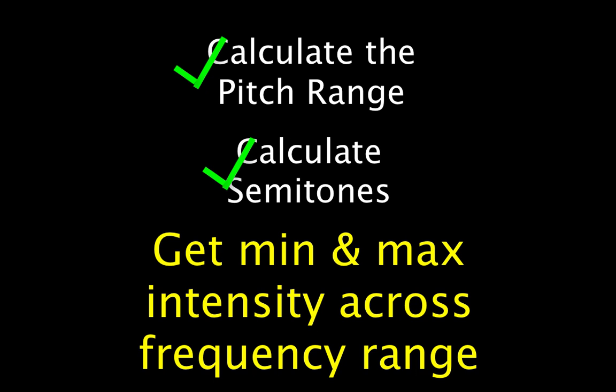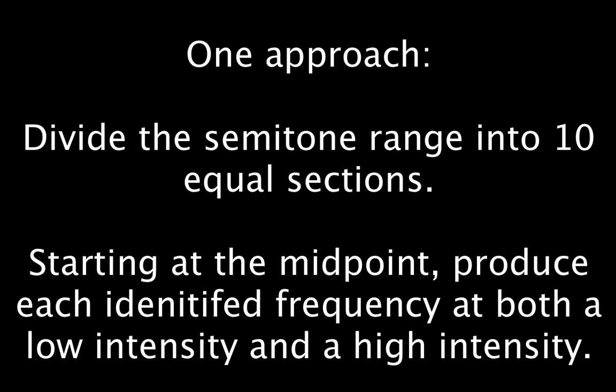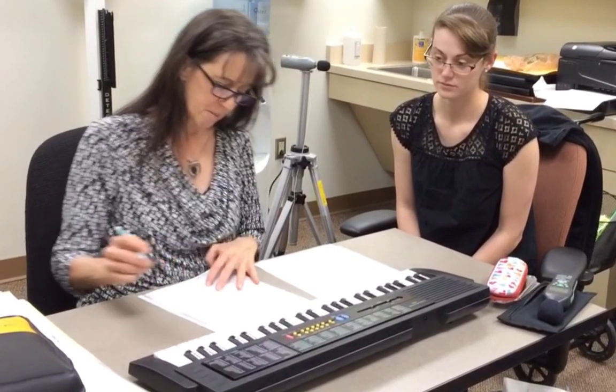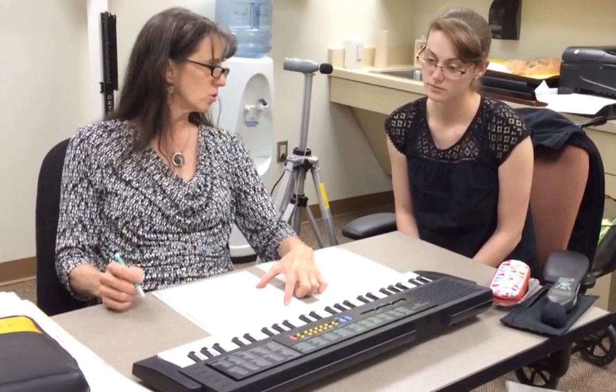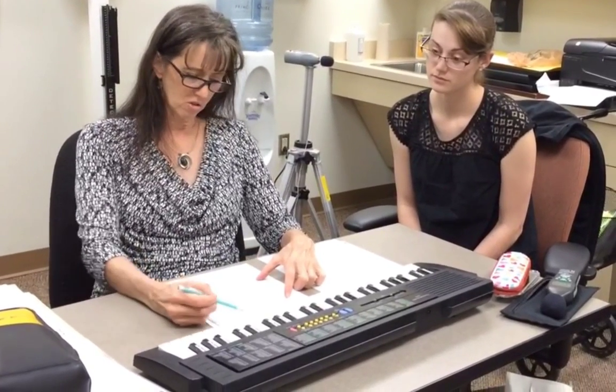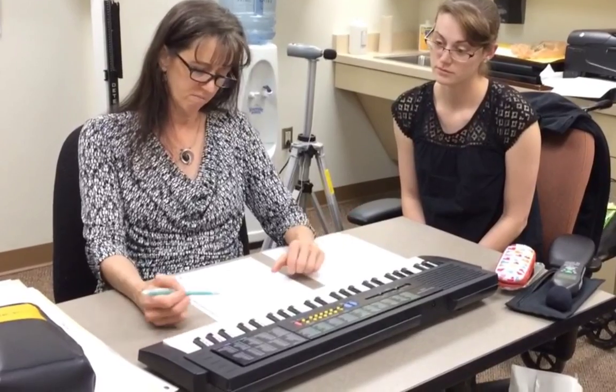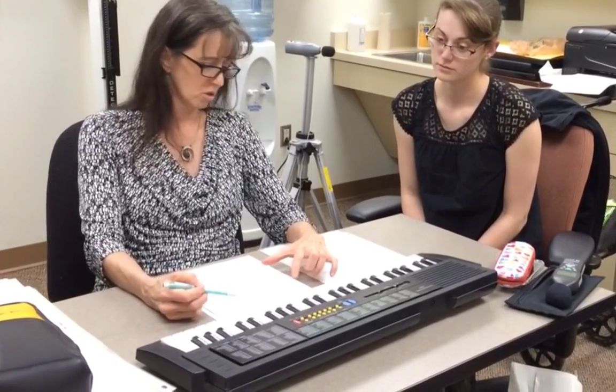Step three is to obtain the minimum and maximum intensity across the frequency range. One way to do this is to divide the semitone range into ten equal sections. Then, starting at the midpoint, produce each identified frequency at both a low intensity and a high intensity.